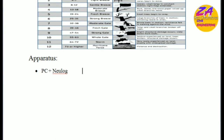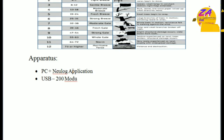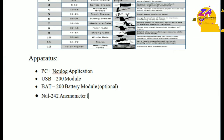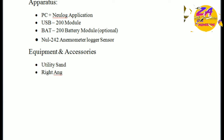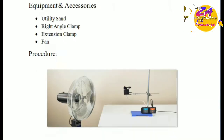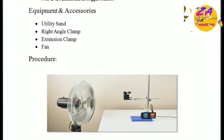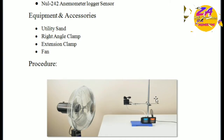The equipment and accessories required are: first, a PC plus NewLog application; second, a USB-200 module and BAT-200 battery module; third, a NUL-242 anemometer logger sensor. The operators and accessories include a utility stand, a right-angle clamp, an extension clamp, and a fan. This is a figure of the fan, extension clamp, utility stand, and right-angle clamp.